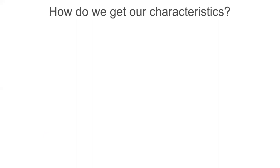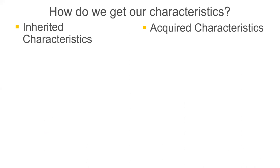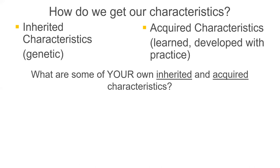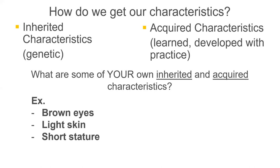If you think about how you get your characteristics — and this goes for other organisms too — you inherit some characteristics genetically, but then you can acquire some characteristics. For example, hula hooping is an acquired characteristic — I learned it, I developed it with practice. Inherited characteristics are things like my eye color, my skin color, my height. I'm sure you can tell the difference between your inherited and your acquired characteristics.